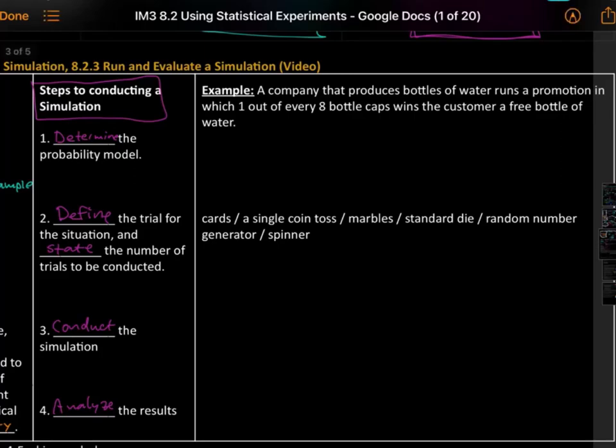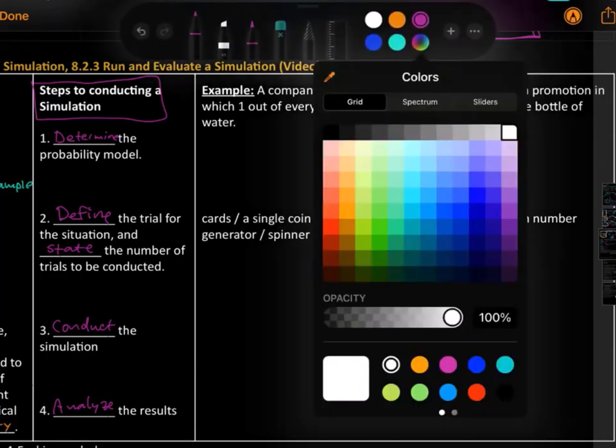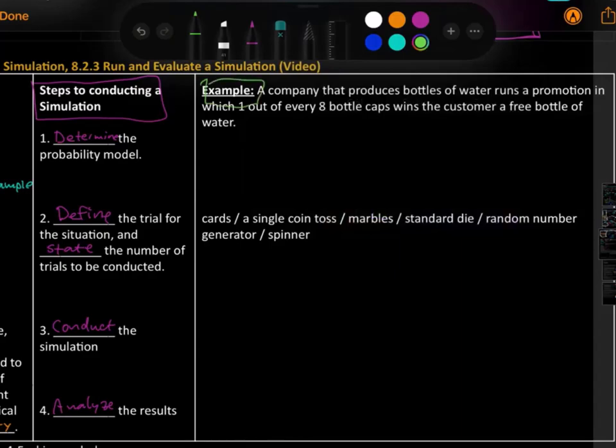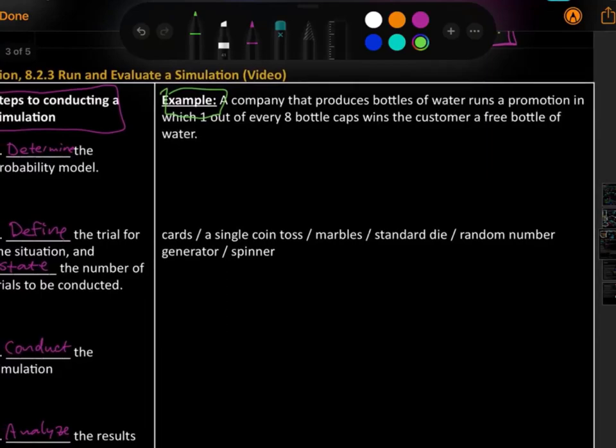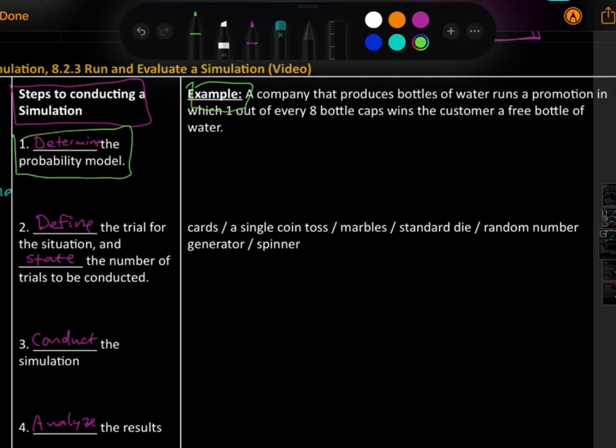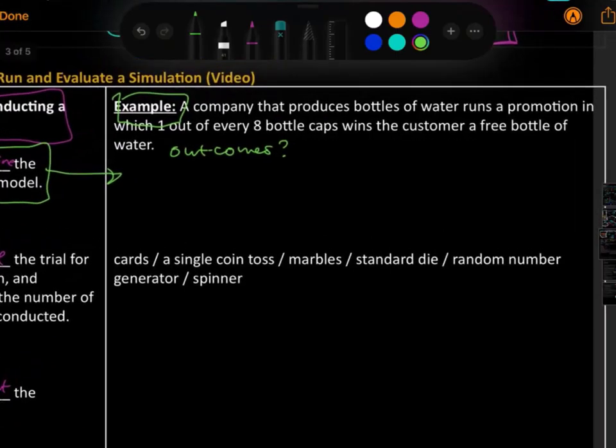Let's try this example over here. A company that produces bottles of water runs a promotion in which one out of every eight bottle caps wins the customer a free bottle of water. So basically what we're going to do is we're going to determine the probability model here. So the question you might want to think about is what are the outcomes?